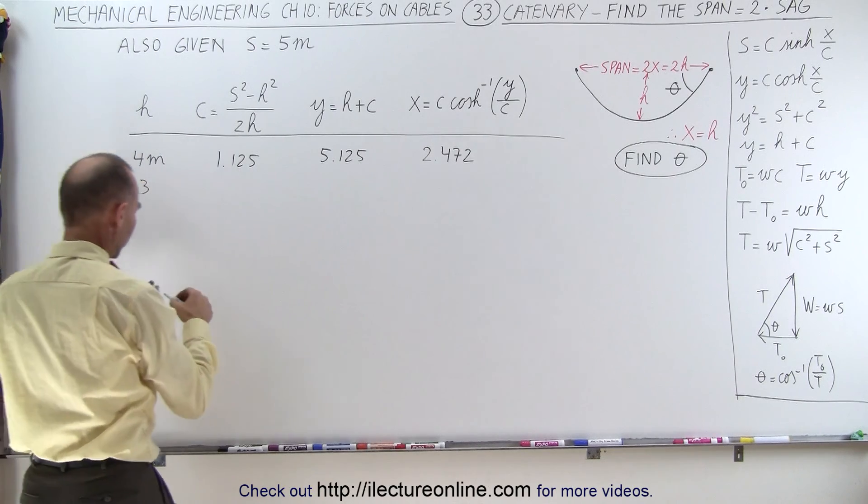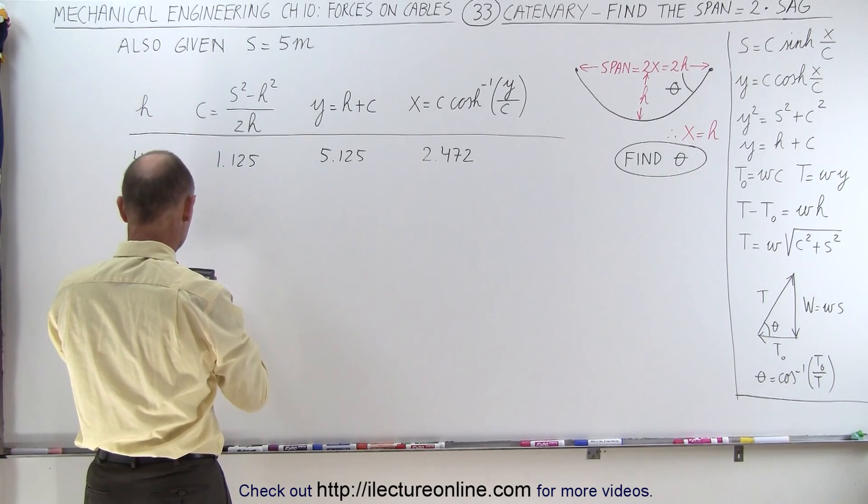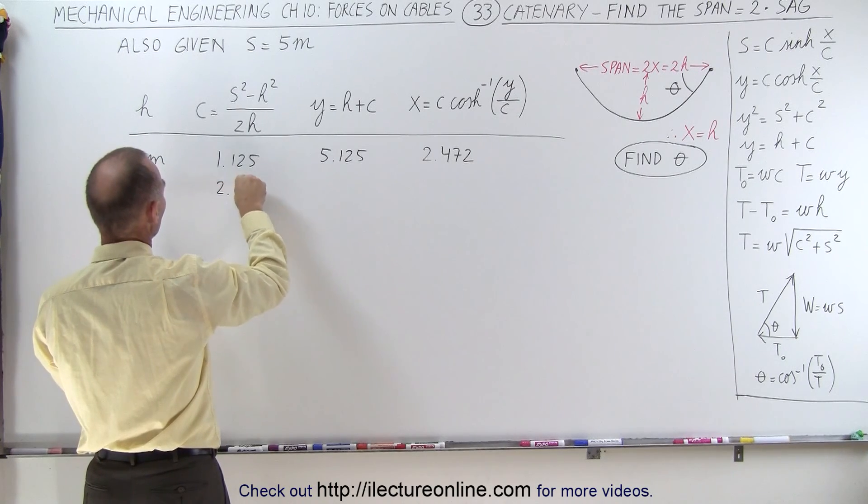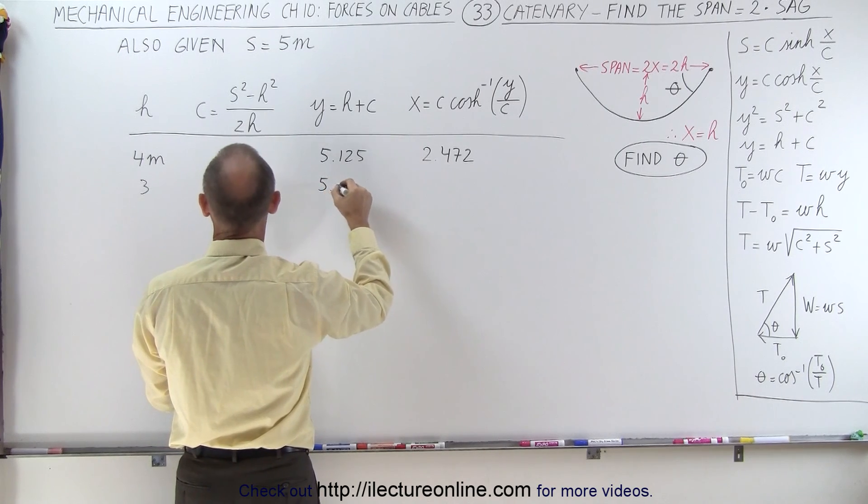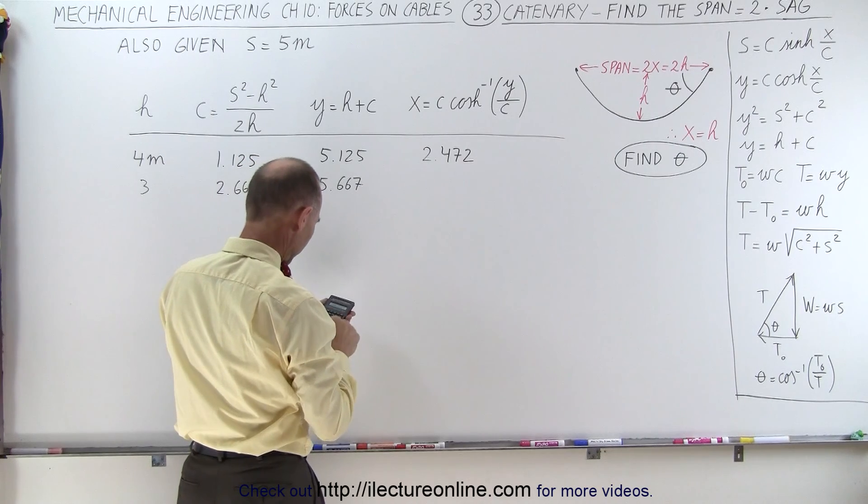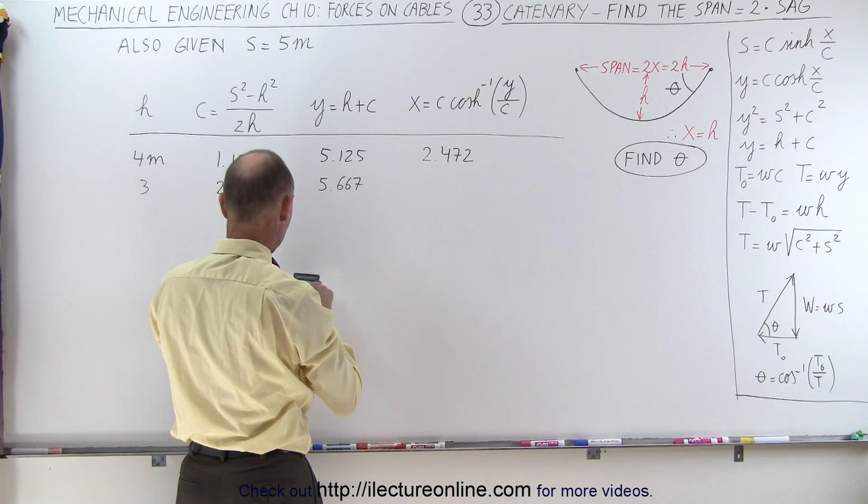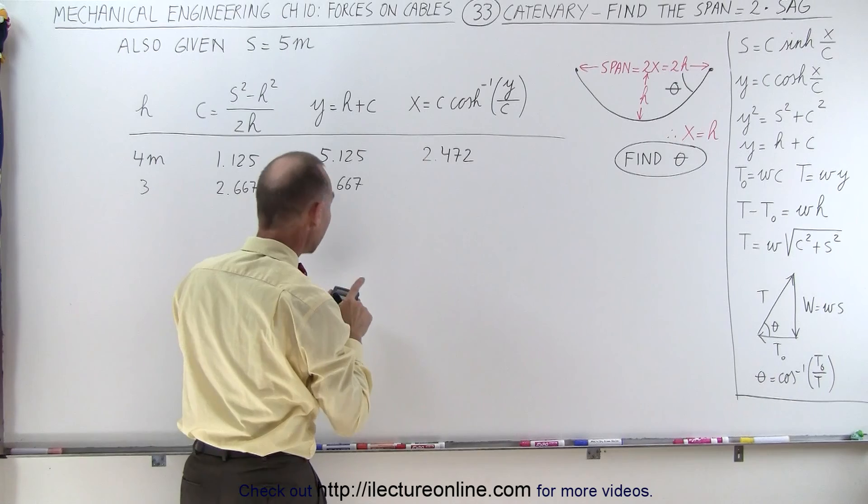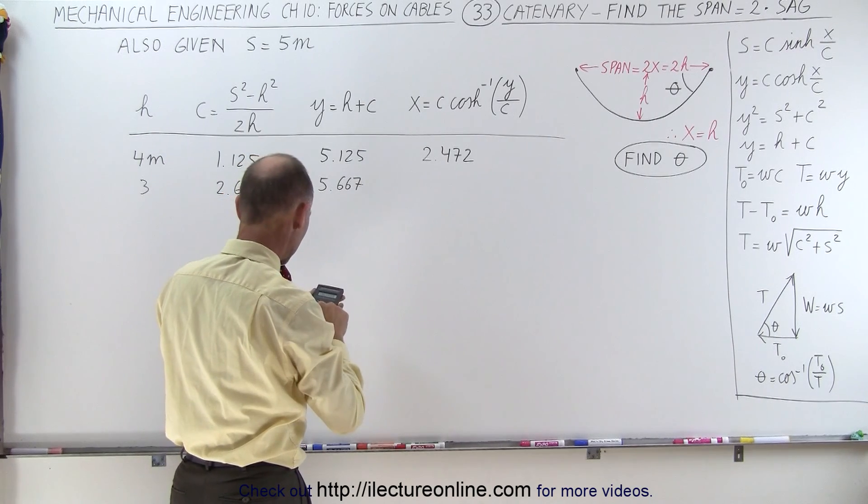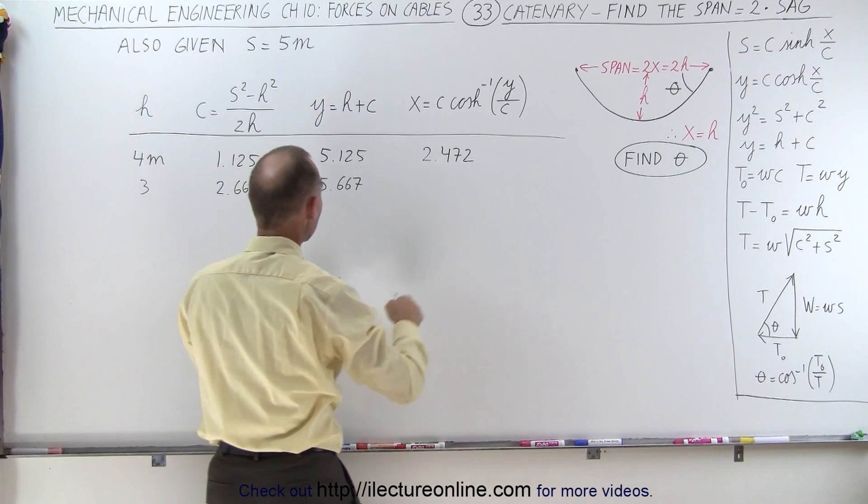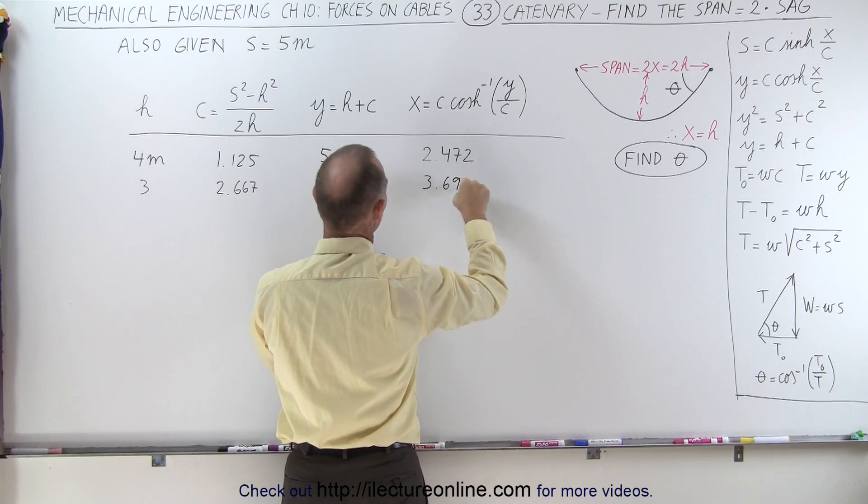We'll make this 3 meters. If this is 3, then we get 25 minus 9 divided by 6. It gives us a c of 2.667. Add h to that, that would be 5.667. Divide that by c, so divide by 2.66666. And take the inverse hyperbolic cosine, and multiply times c. Now we get 3.6968.